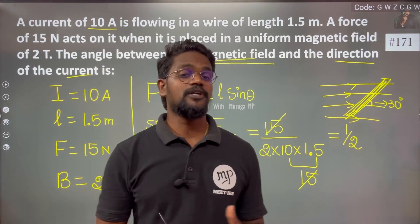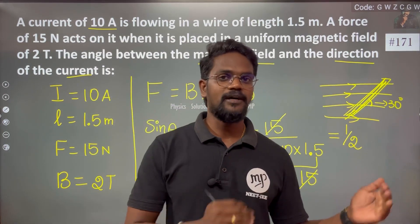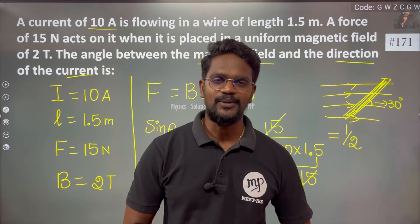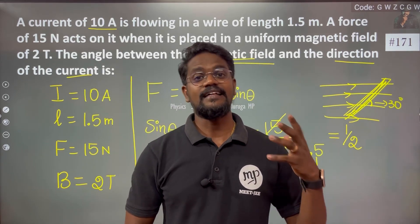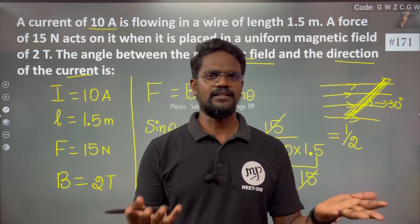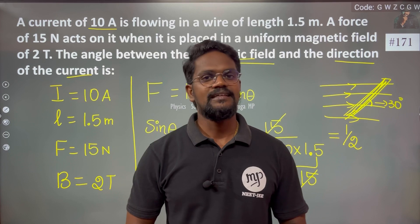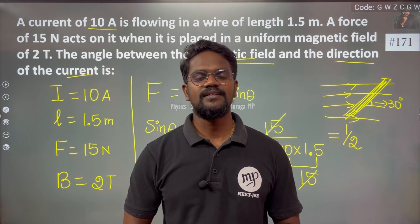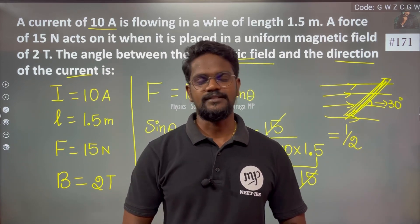A conceptual video about this problem is already posted. For a current-carrying conductor placed in a magnetic field, the force is given by F = B I L sin theta, where theta is the angle between the magnetic field and the current.